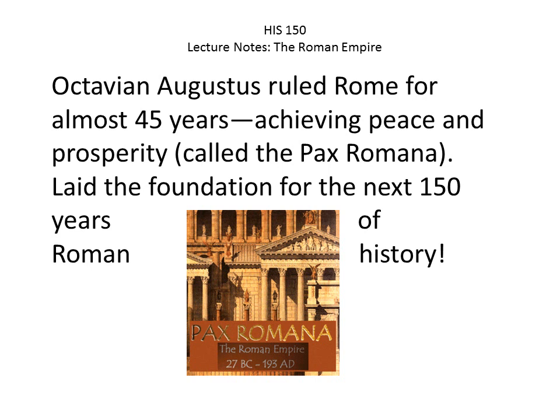Octavian Augustus ruled Rome for almost 45 years, achieving peace and prosperity. This is called the Pax Romana — the Roman Peace — and it laid the foundation for the next 150 years of Roman history. If you are constantly at war, you spend all your money fighting. Whereas if you are at peace, you can build up infrastructure: buildings, roads, water and utility projects.